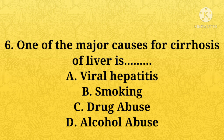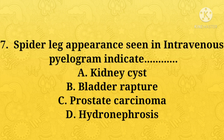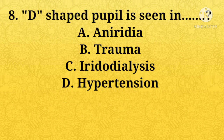One of the major causes for cirrhosis of liver is — A: viral hepatitis, B: smoking, C: drug abuse, D: alcohol abuse. Option D, alcohol abuse, is the right answer. Spider leg appearance seen in intravenous pyelogram indicates — A: kidney cyst, B: bladder rupture, C: prostate carcinoma, D: hydronephrosis. Option A, kidney cyst, is the right answer.